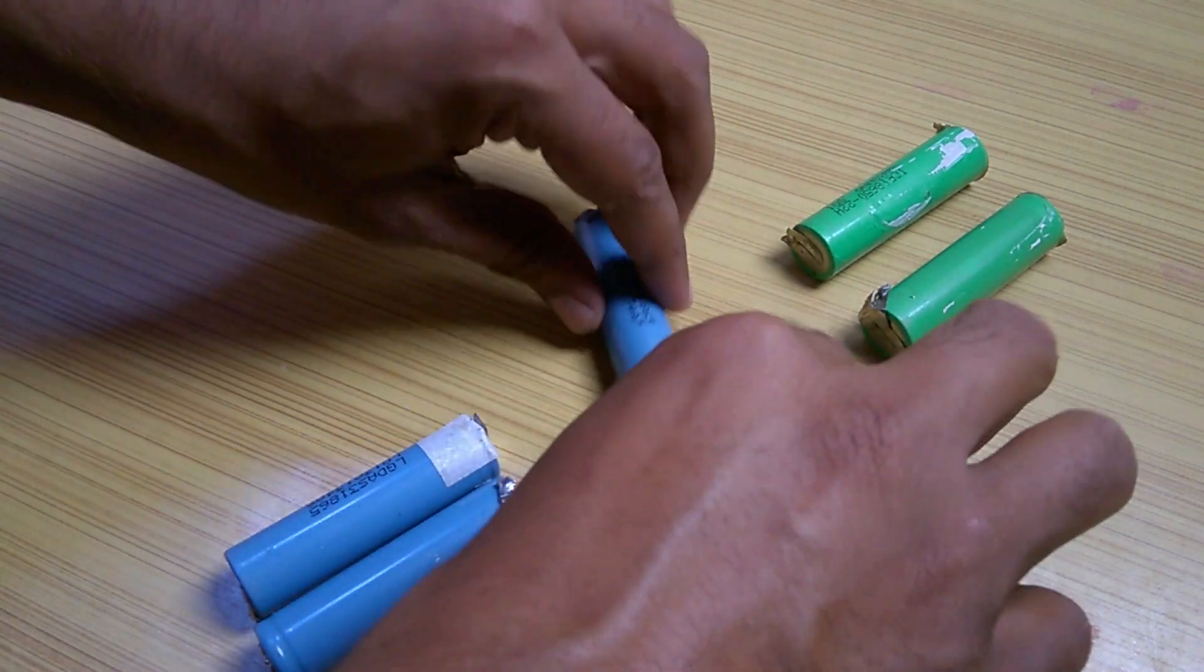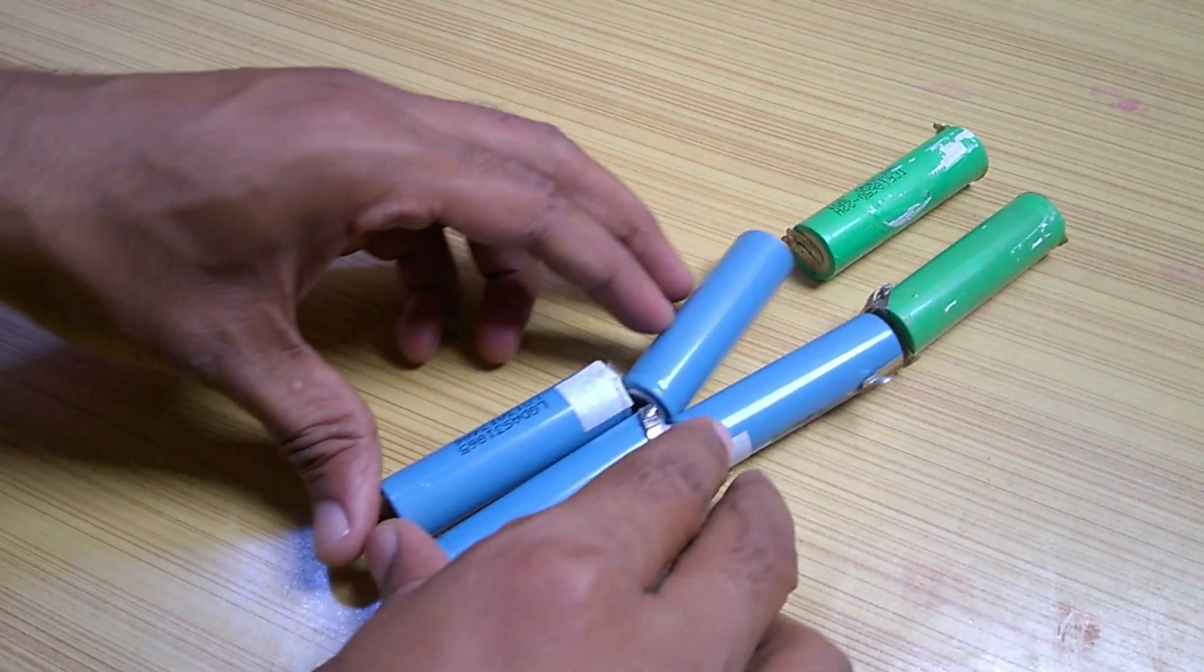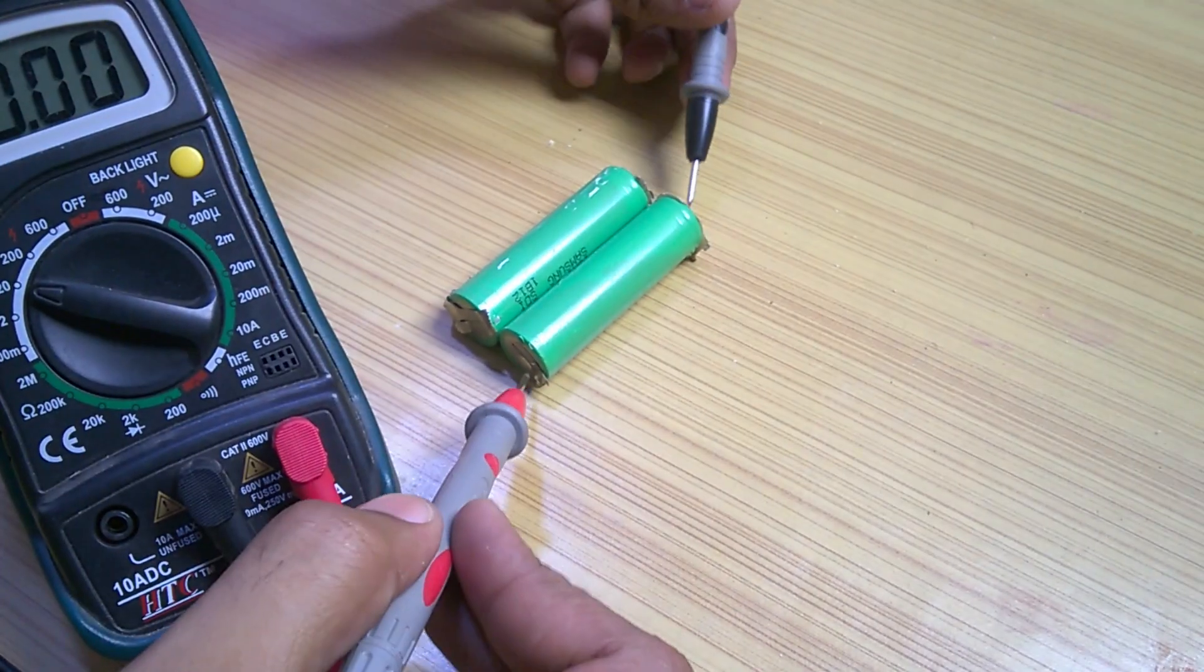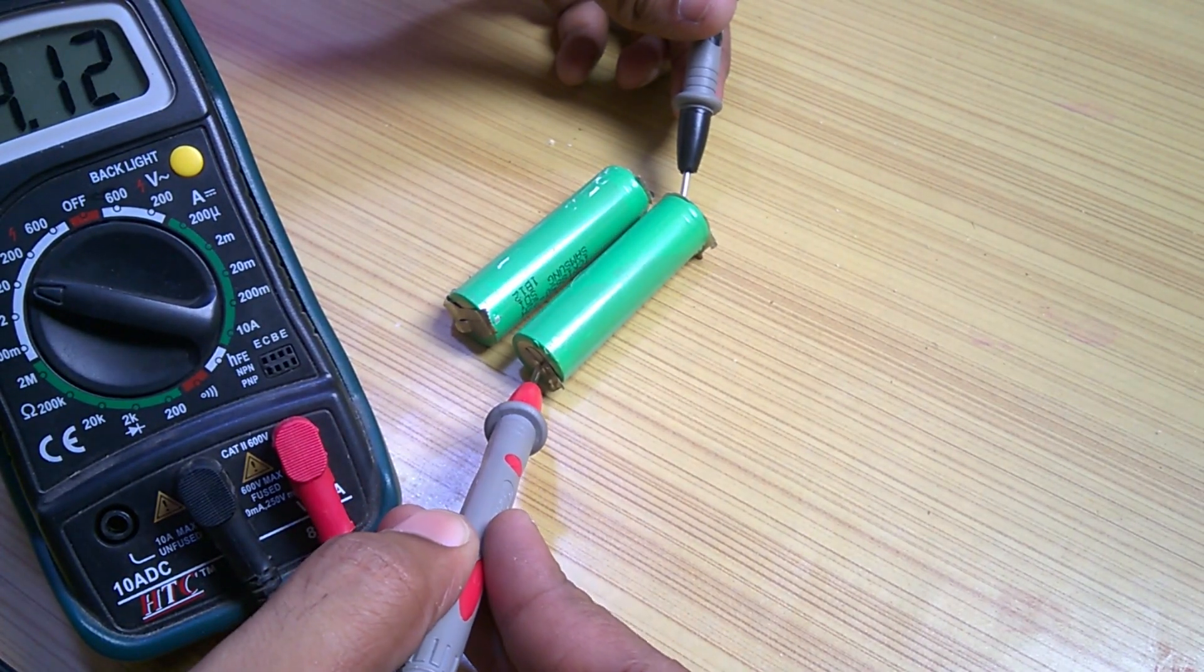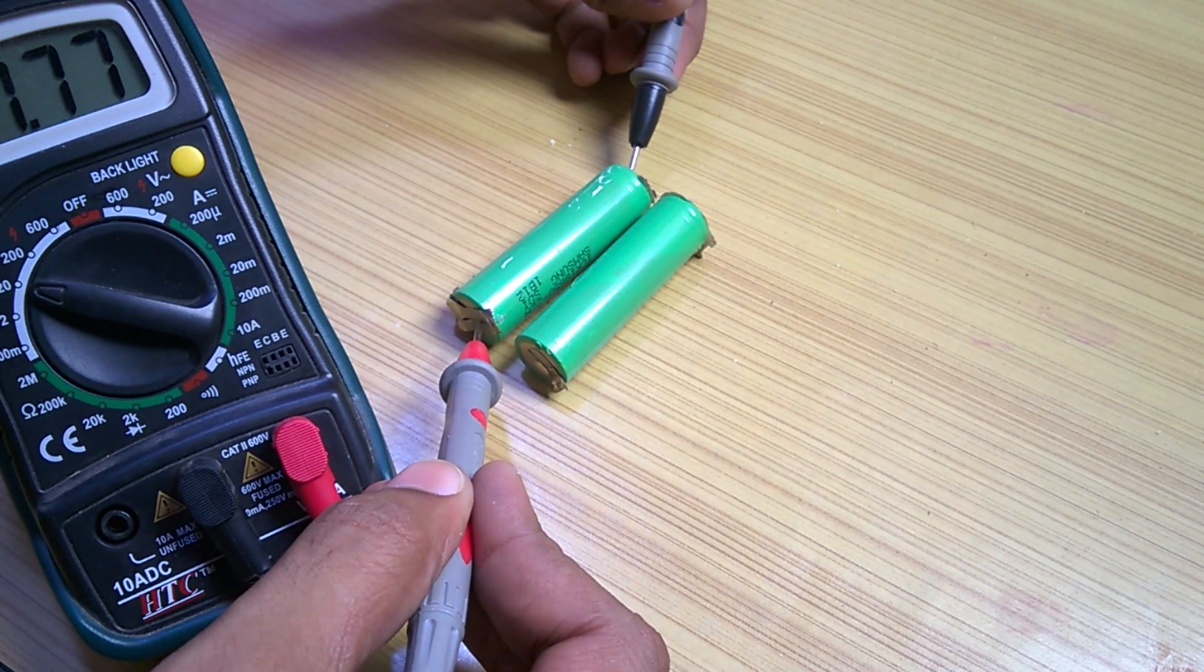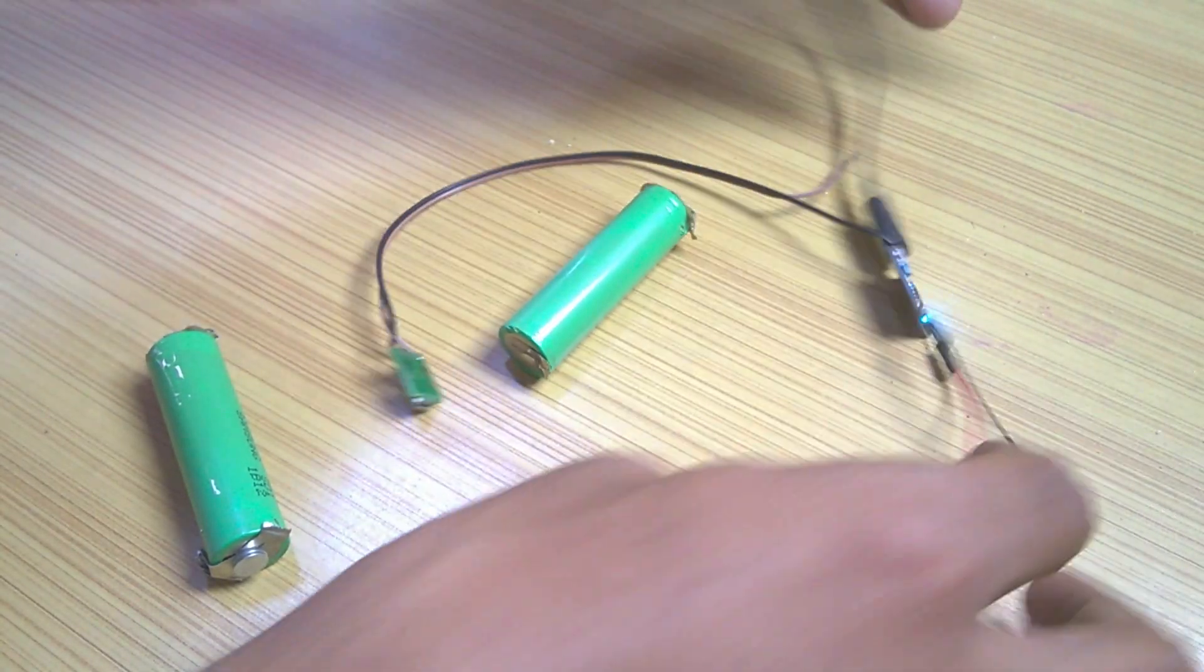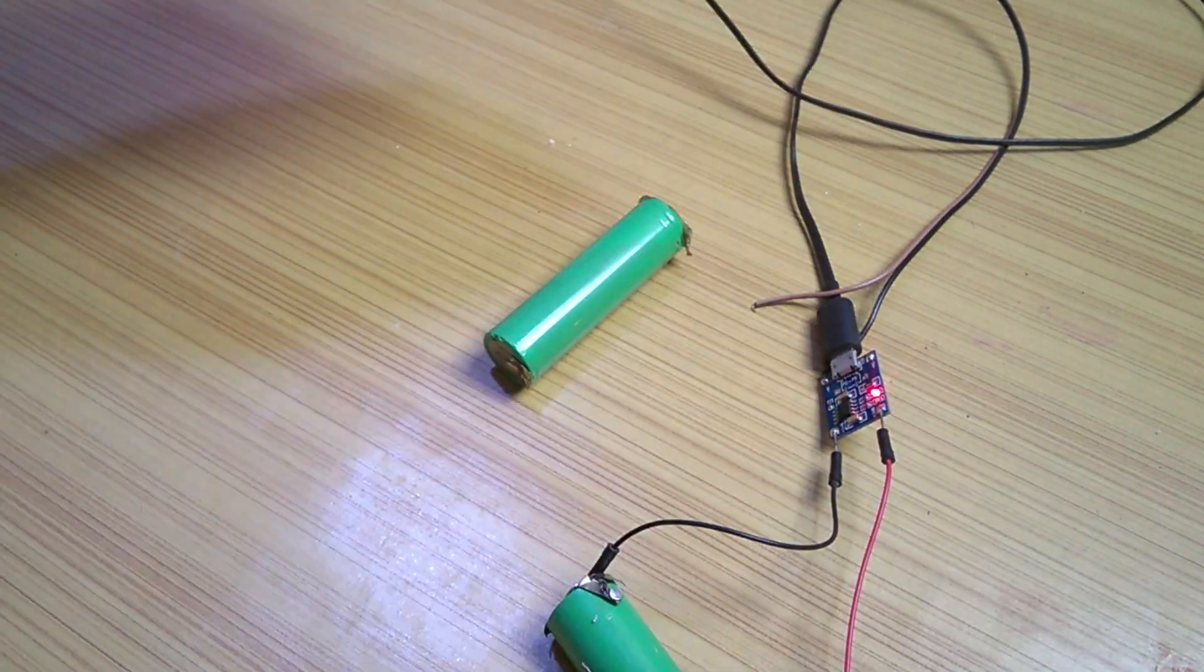Firstly, I will connect two cells in parallel and obtain three batteries and then I will connect them in series. But before connecting them in parallel, please check that the voltage range of the two cells are close to each other. And if it is not so, please charge the cell with lower reading with a lithium-ion battery charger.